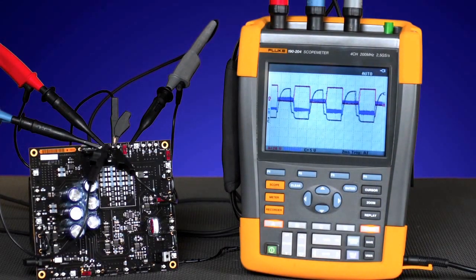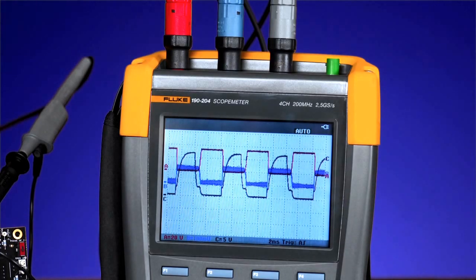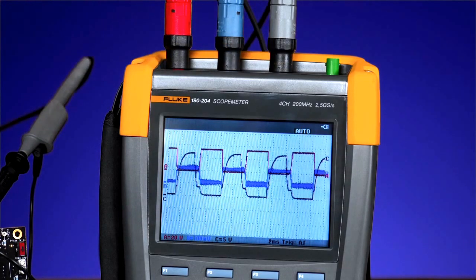We're connected to the circuit on the test using the simulated board. With the 190 Series Scopemeter isolated input architecture, we're able to connect up to three input channels at once.